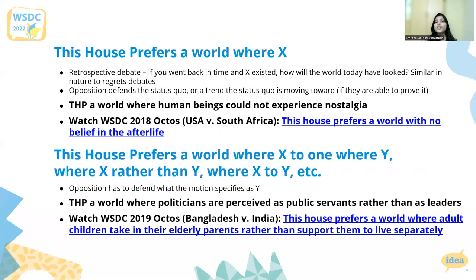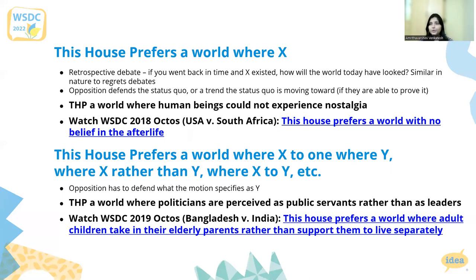Finally, 'this house prefers a world where x to a world where y,' or 'this house prefers a world where x rather than y.' Here, opposition has to defend what the motion specifies as y. So in 'this house prefers a world where politicians are perceived as public servants rather than as leaders,' prop says they want them perceived as public servants, and opposition has to say they want them thought of as leaders. Opposition cannot defend anything else that they might prefer.